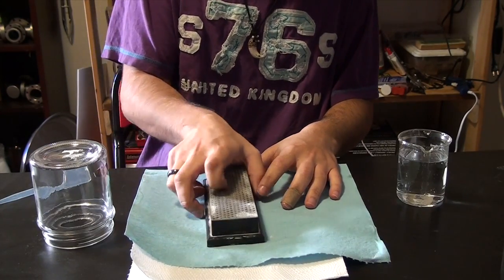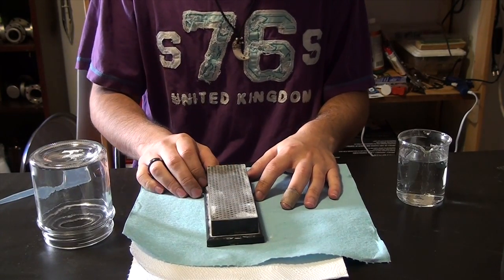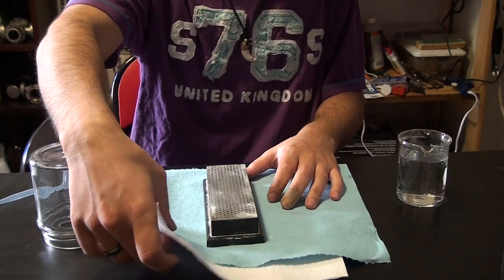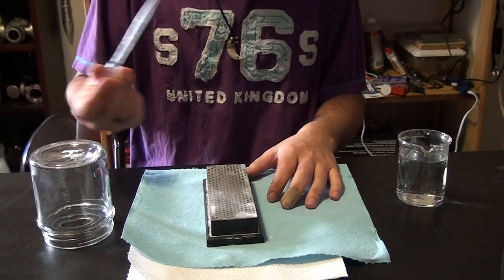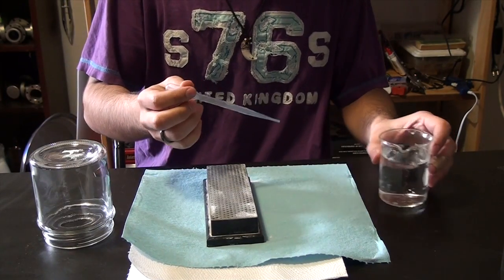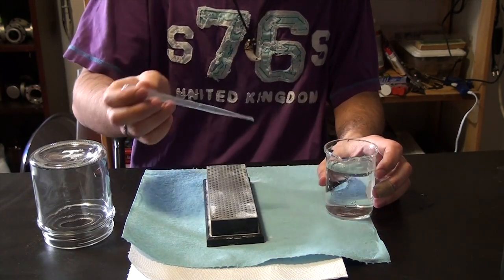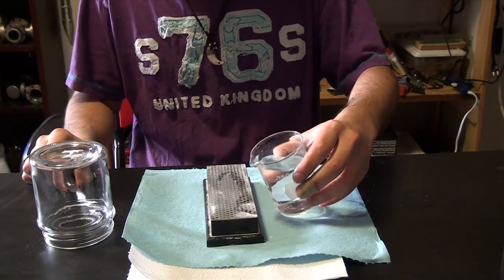To start off, you're going to need a coarse grinding stone. The really fine ones take forever, so I'm using a really coarse diamond stone. You're going to need a pipette, a little bit of regular water, and make sure to keep the stone wet.